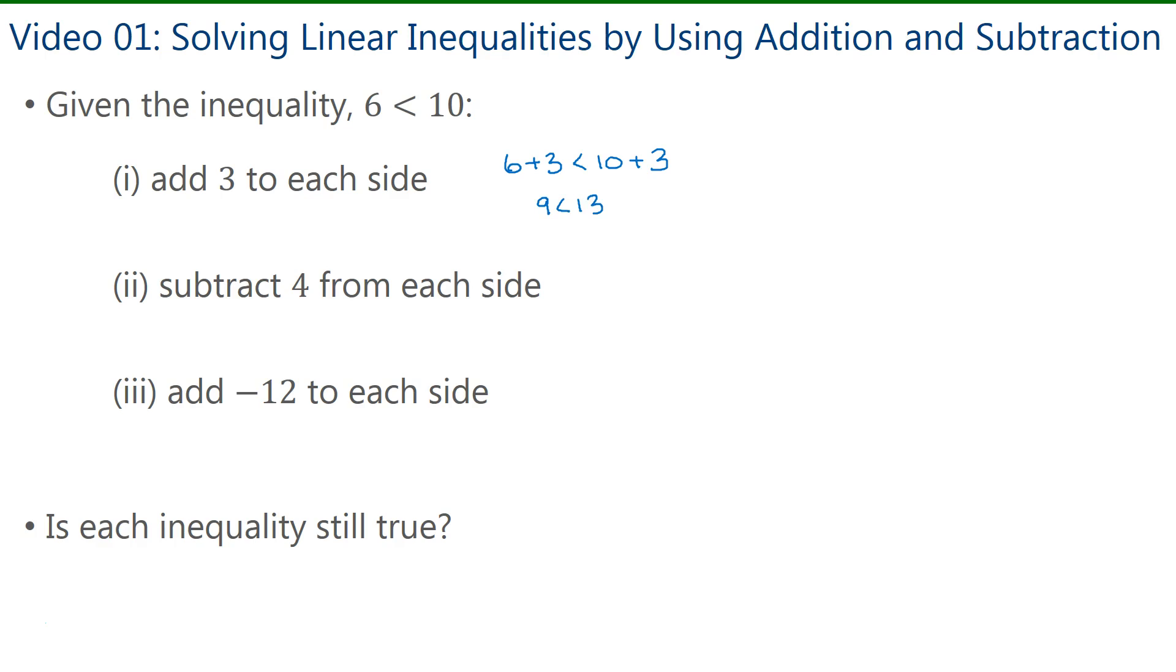The second part, we have to subtract 4 from each side. So 6 take away 4 is less than 10 take away 4, which becomes 2 is less than 6.